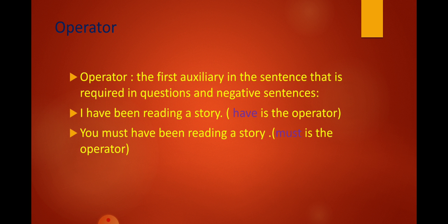So what does that mean? This means that when I want to make this sentence negative, the negation word 'not' is attached with 'have' rather than any other auxiliary. If I change this sentence into negative, it becomes: 'I have not been reading a story.' And if I make it a question: 'Have I been reading a story?' or 'Have you been reading a story?' We move the verb 'have' before the subject in this sentence — so it is the operator.